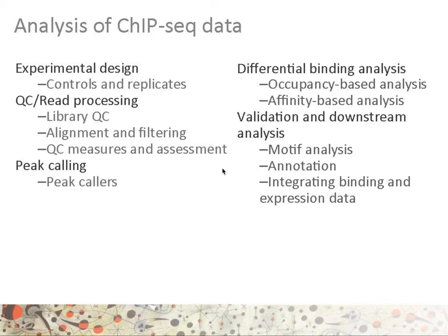Analysis of ChIP-seq data. As for all high-throughput sequencing data, first we will start by having a proper experimental design with controls and replicates. Then, after getting the sequencing data back from the sequencing facility, we will perform a quality check and some read preprocessing. The quality check will ensure that the quality of every sample or library was adequate.